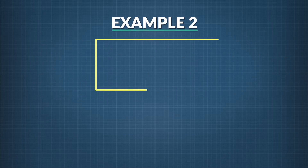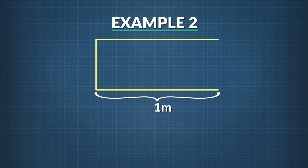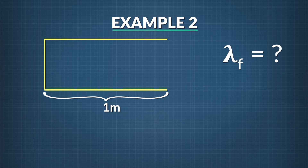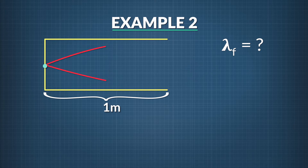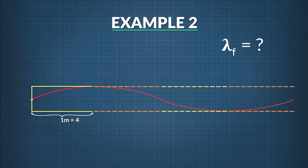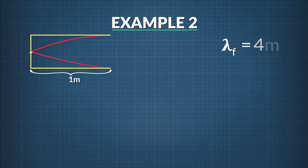Here's another example. You decide to make standing sound waves in a one-meter-long pipe with one end open and the other end closed. What is the fundamental wavelength? Drawing the fundamental wavelength for a pipe with one open and one closed end, we see an antinode at the open end and one node at the closed end. A general rule for pipes like this is their fundamental wavelength is 4 times the length of the pipe, so the fundamental wavelength is 4.0 meters.